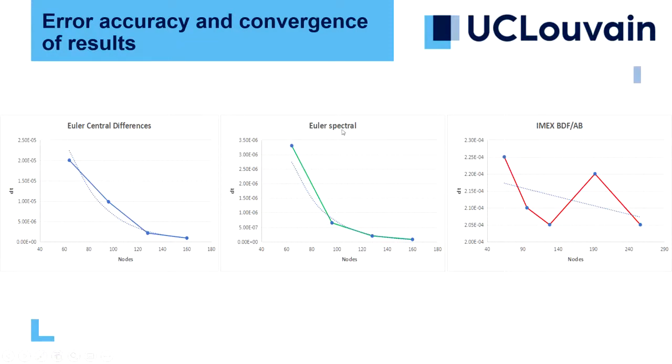Here, as we can see, there are the trends of the error evolution. For example, here in the Euler central difference, the rate of decrease of the error is not as large as the Euler in the spectral domain. All three methods are in exponential way. But as we can see here, the IMEX BDF is the most stable of all three, which has a lower decrease rate than the other two.